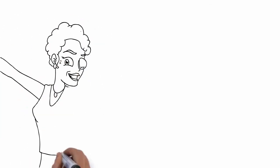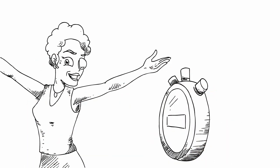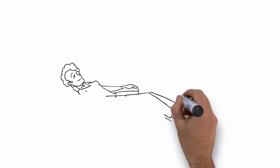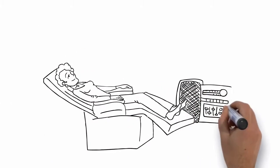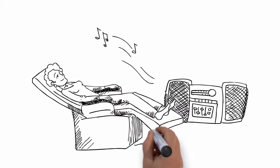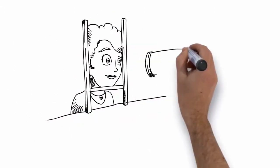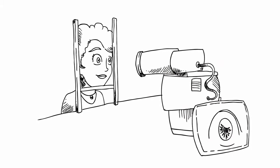The DSAEK cornea transplant is performed as an outpatient procedure. It takes about 30 minutes and then you're on your way. You'll be asked to lie on your back and look up at the ceiling for the first 24 hours so your new cornea can settle in. Of course, you can get up to eat and use the facilities. The doctor will see you the next morning to see how you're doing.